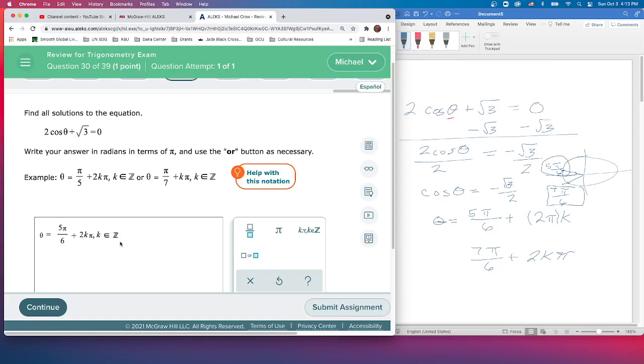k could be 1, 2, 3, 4, or zero. Because if k was zero, that's just 5π over 6. It could be negative. And then the other answer is 7π over 6. And again, we can keep going around in circles, so that's going to be 7π over 6 plus 2kπ.